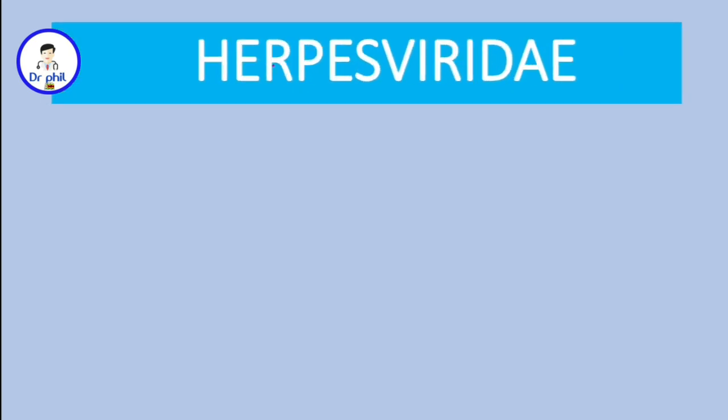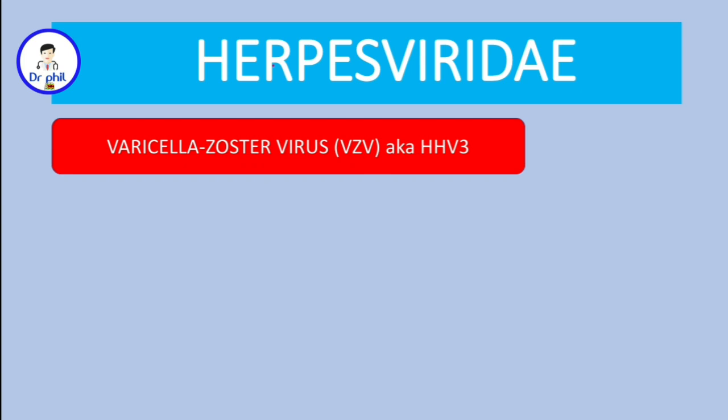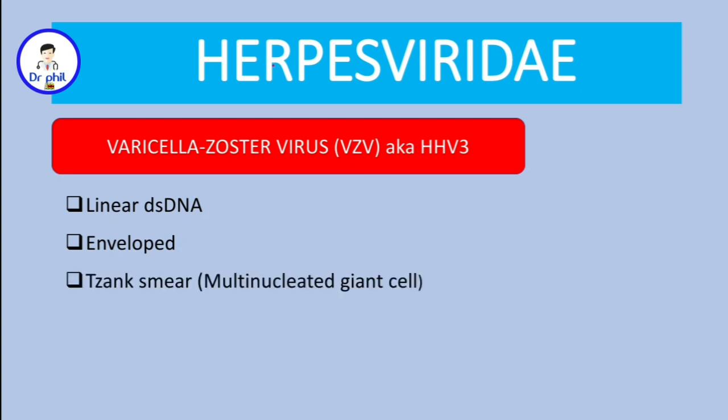In this video we are talking about the varicella zoster virus, or VZV, also known as human herpes virus 3. Like other herpes viruses, it is a linear double-stranded DNA virus. It has an envelope, and on Tzanck smear preparation we can see multinucleated giant cells.